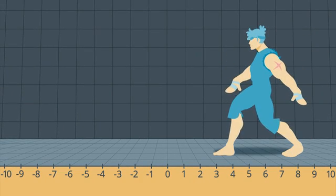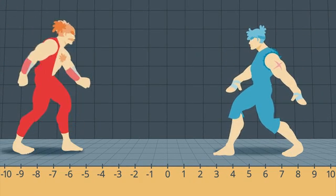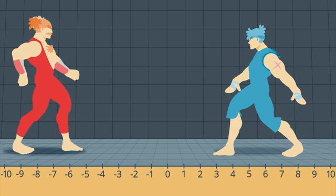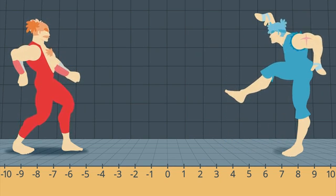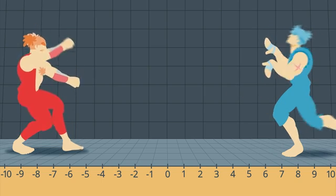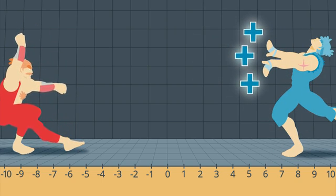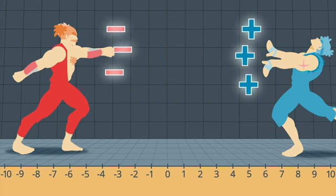Okay, let's look at the number line to see what happens when we have to add opposite numbers with the same absolute value. Noah attacks first with a positive 3, and Elena counters with a negative 3.